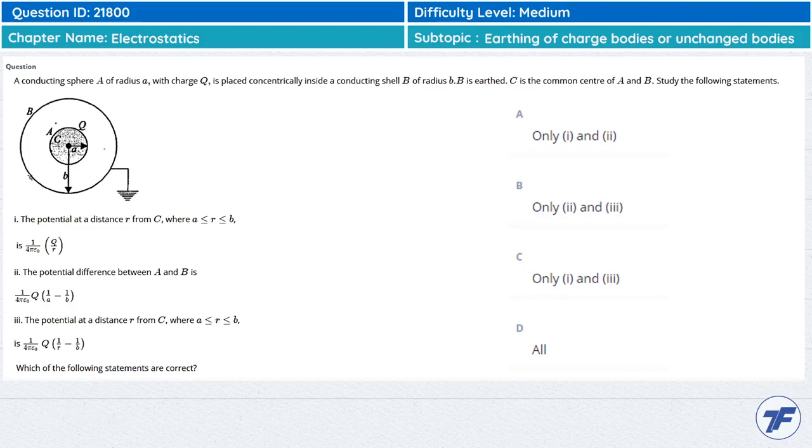Study the following statements. We will see how the statements are true. The potential at a distance small r from C, where a is smaller than or equal to small r, which means the point of potential is written in both spheres.